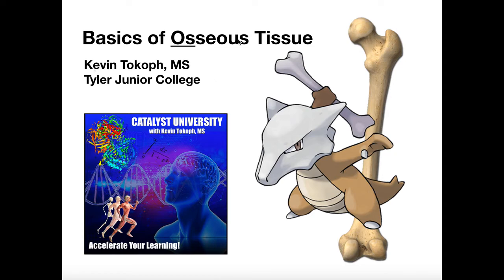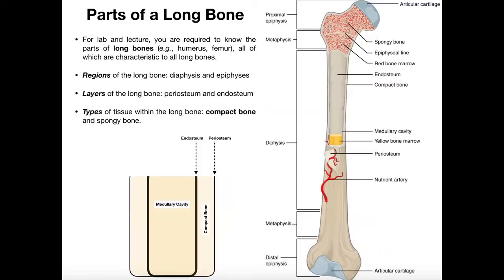Osseous just means bone, and collectively all the bones make up what we call the skeletal system. In this video, we're going to be discussing the parts of a long bone. A long bone is really just a bone that's much longer than it is wide. This is actually the human femur — the proximal bone in your leg. The humerus is another great example, as are the radius, ulna, tibia, and fibula. They're all much longer than they are wide.